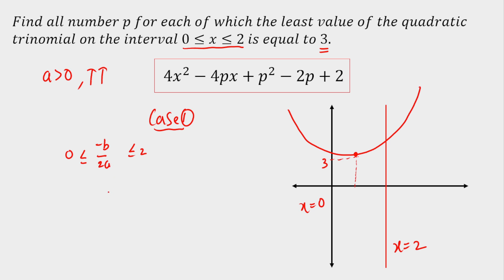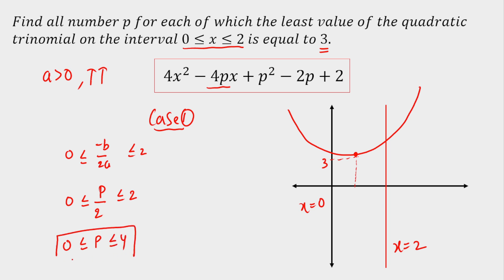Now, -B/2A — here B is the coefficient of x, that is 4P, so we get P/2 should be from 0 to 2. That means P is from 0 to 4. This is the condition. Now, at the same time, the least value should be equal to 3, as given.